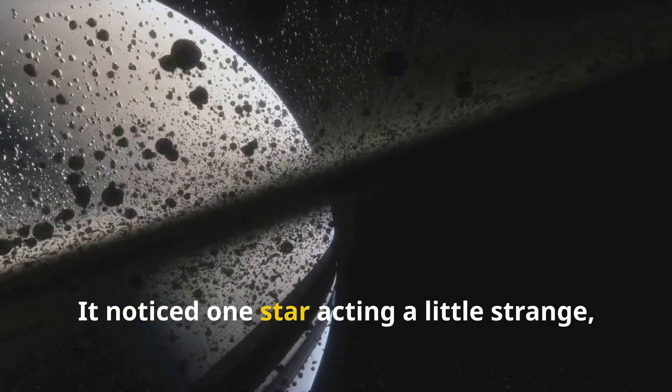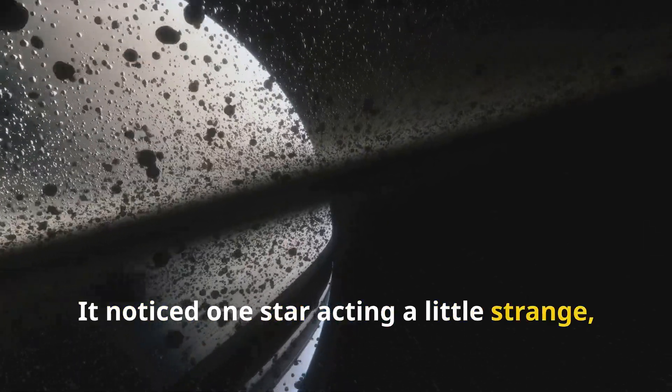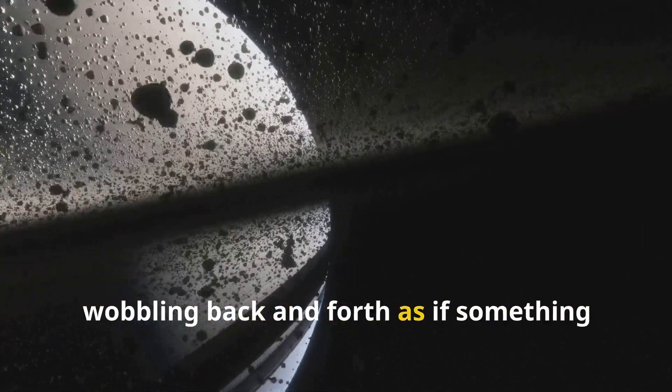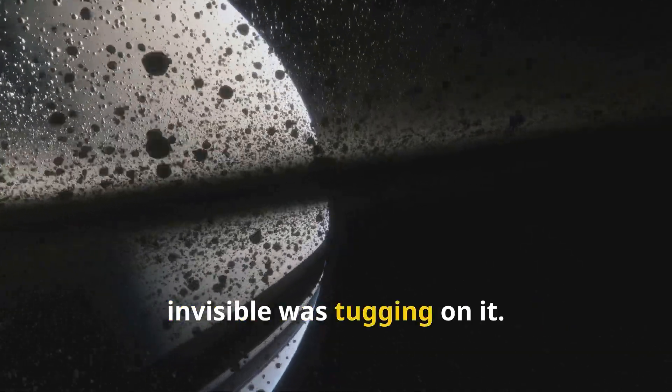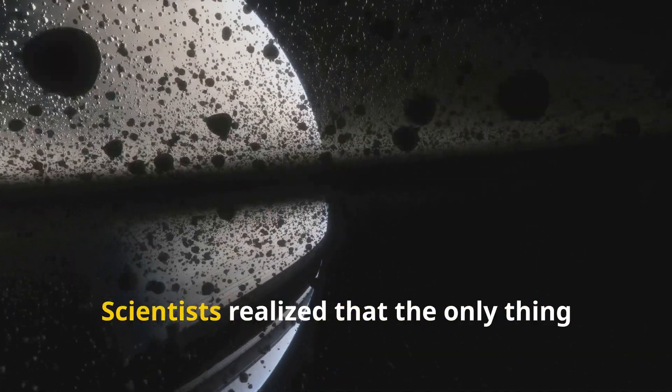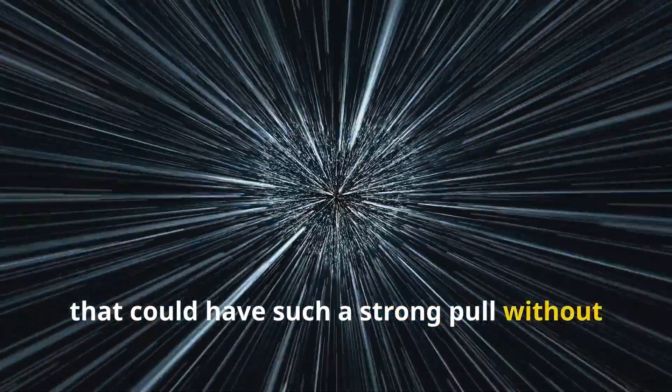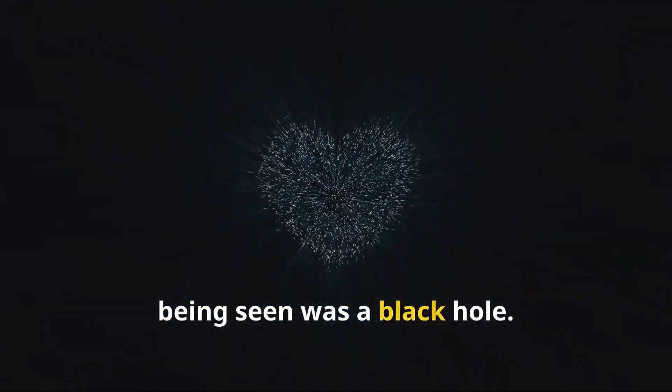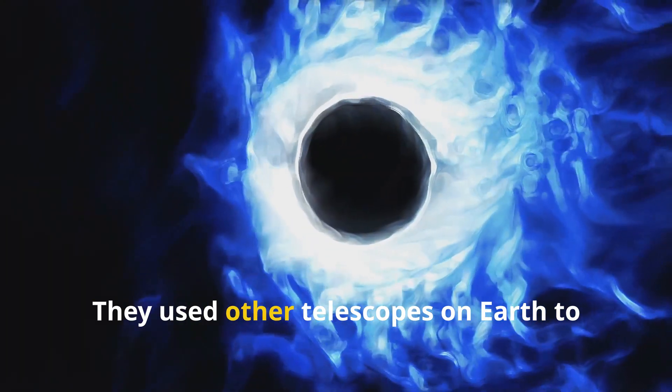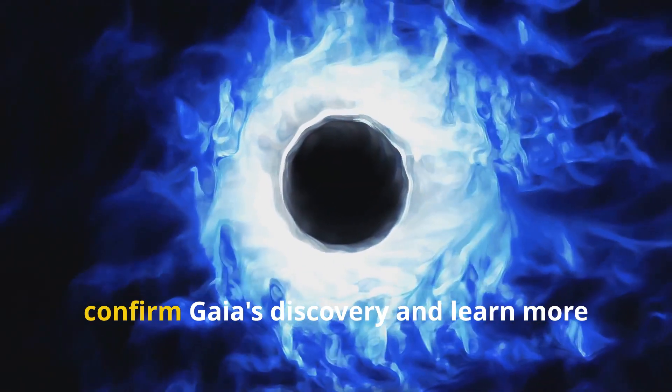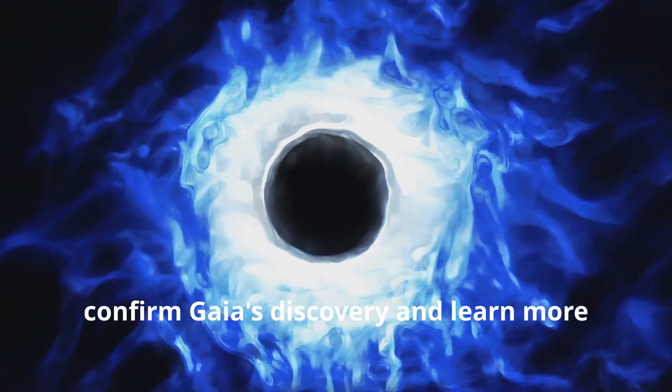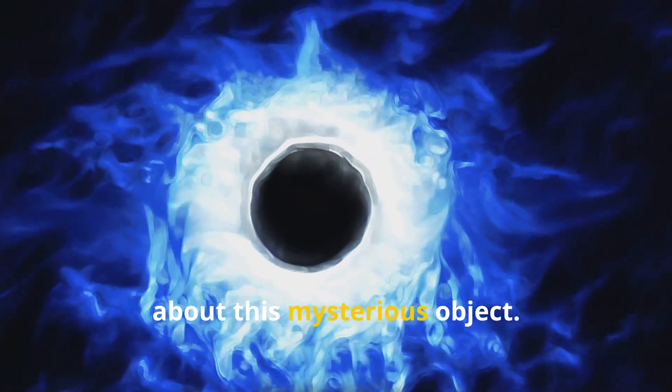It noticed one star acting a little strange, wobbling back and forth as if something invisible was tugging on it. Scientists realized that the only thing that could have such a strong pull without being seen was a black hole. They used other telescopes on Earth to confirm Gaia's discovery and learn more about this mysterious object.